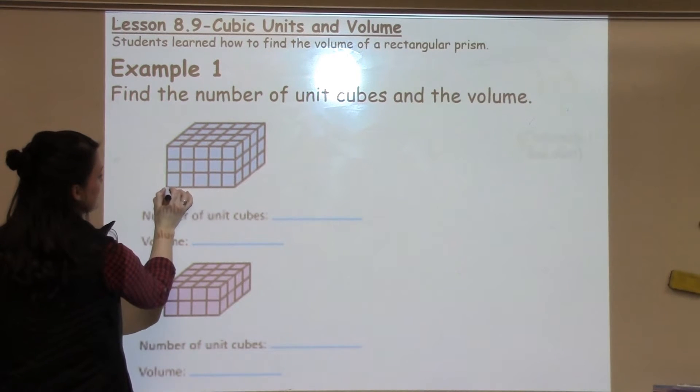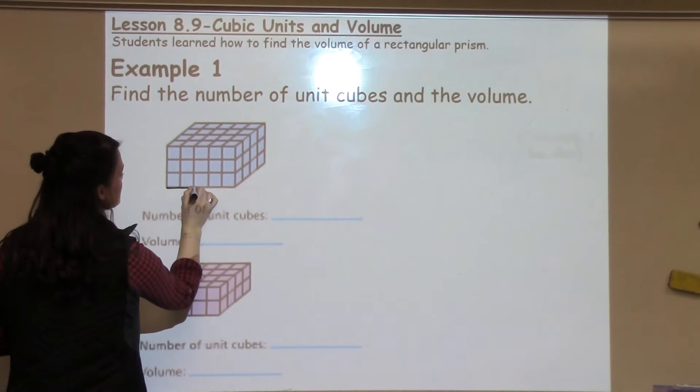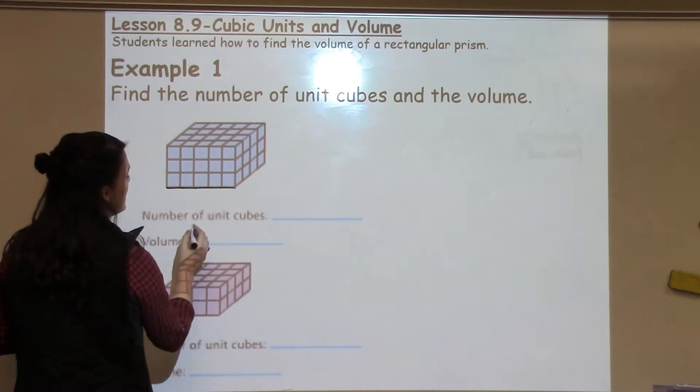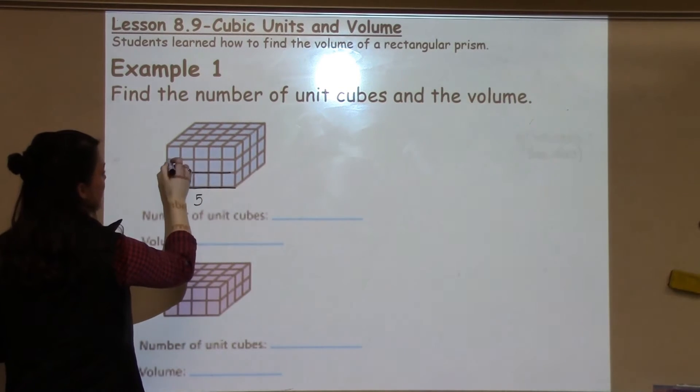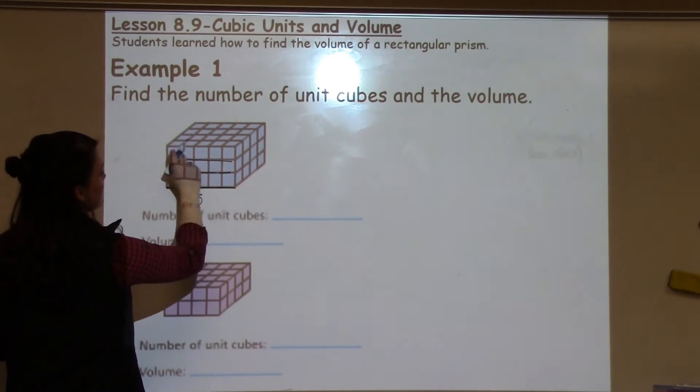So when I look at how many cubes I have going across, which is the length, I have 1, 2, 3, 4, 5. Alright, so I know that I've got 5 going across on every single layer. I've got 5 here, 5 here, 5 here.